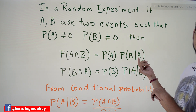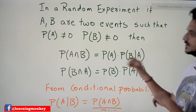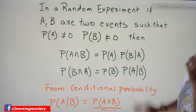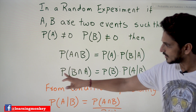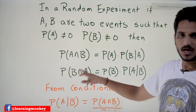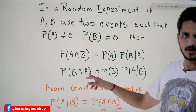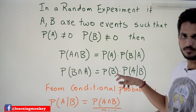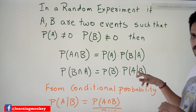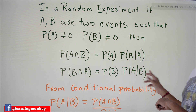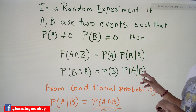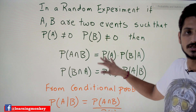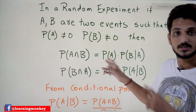That is what the multiplication rule says: P(A∩B) = P(A) · P(B|A), where P(B|A) means the probability of B given that A has already occurred. Similarly, P(B∩A) is given as P(B) multiplied by P(A|B), i.e., the probability of A given B happened. These are the two forms of the multiplication rule equation.